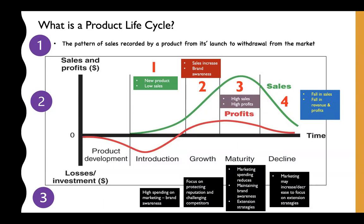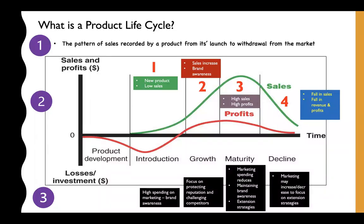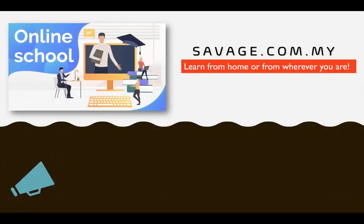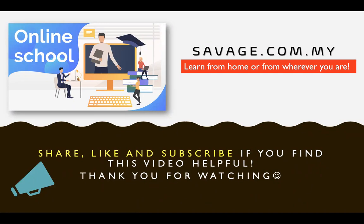So there you go — those are the four stages of the product life cycle. Just like the growth of a plant or human being, there is growing, maturing, and eventually declining, and we've looked at the marketing activities a business would use to encourage or maintain the product in the market. Hope you were able to follow. If you find this video useful, please share it with your friends. Have a great day ahead!